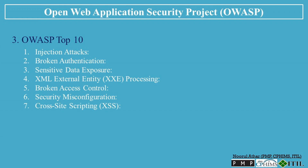Number 7: Cross-Site Scripting (XSS). XSS vulnerabilities allow attackers to inject malicious scripts into webpages viewed by other users. These scripts can steal session cookies, redirect users to malicious sites, or perform other harmful actions. To prevent XSS, developers should validate and sanitize all user inputs and implement proper Content Security Policy (CSP) headers.